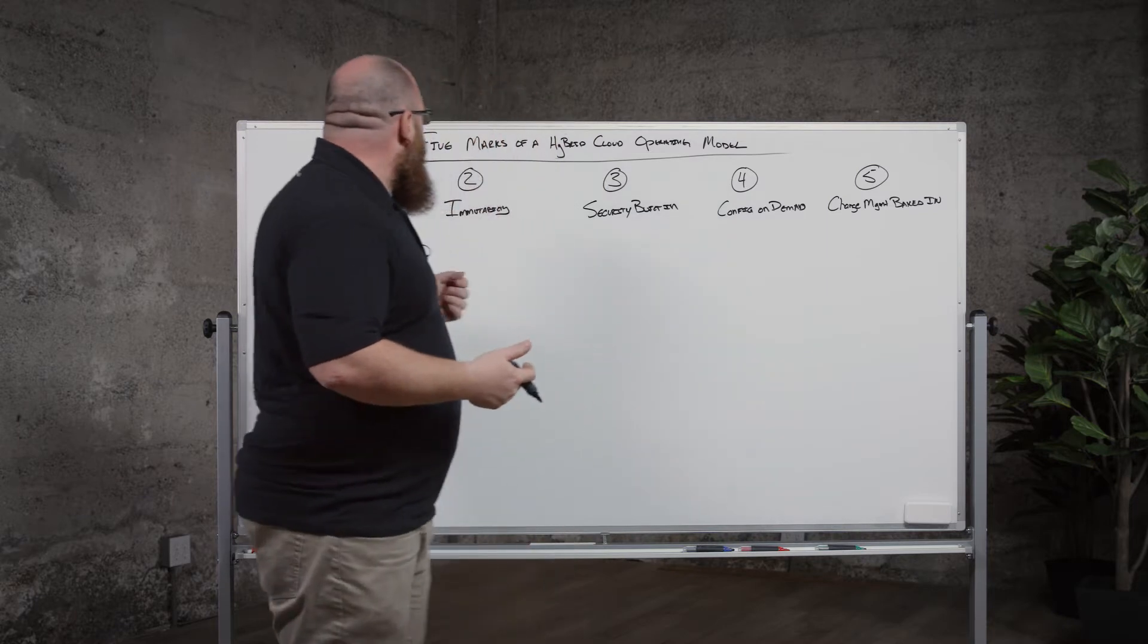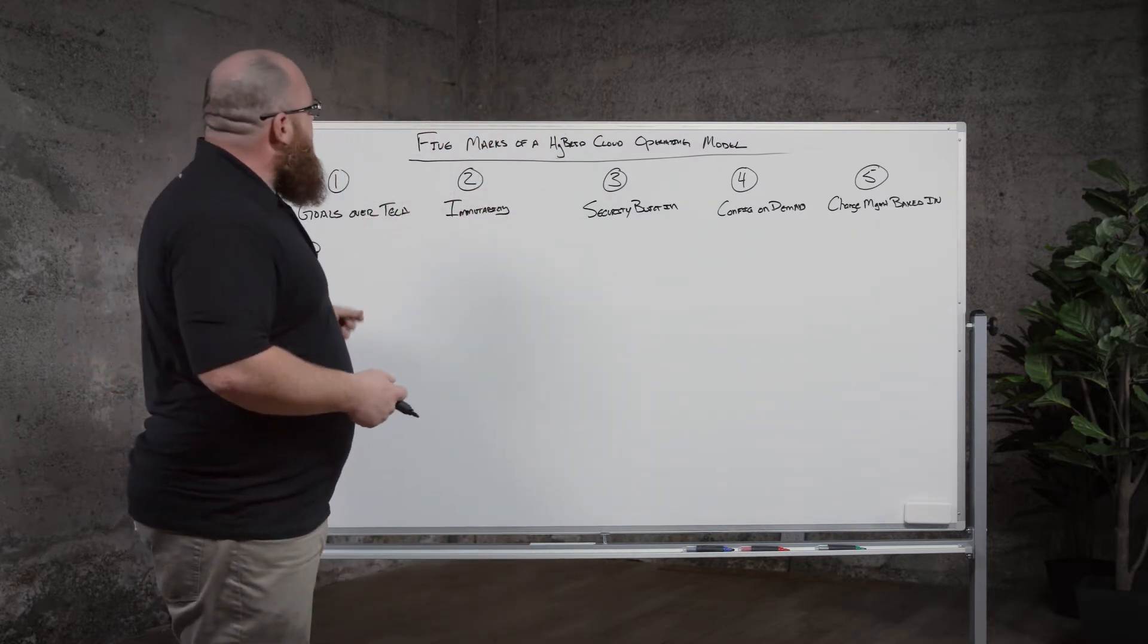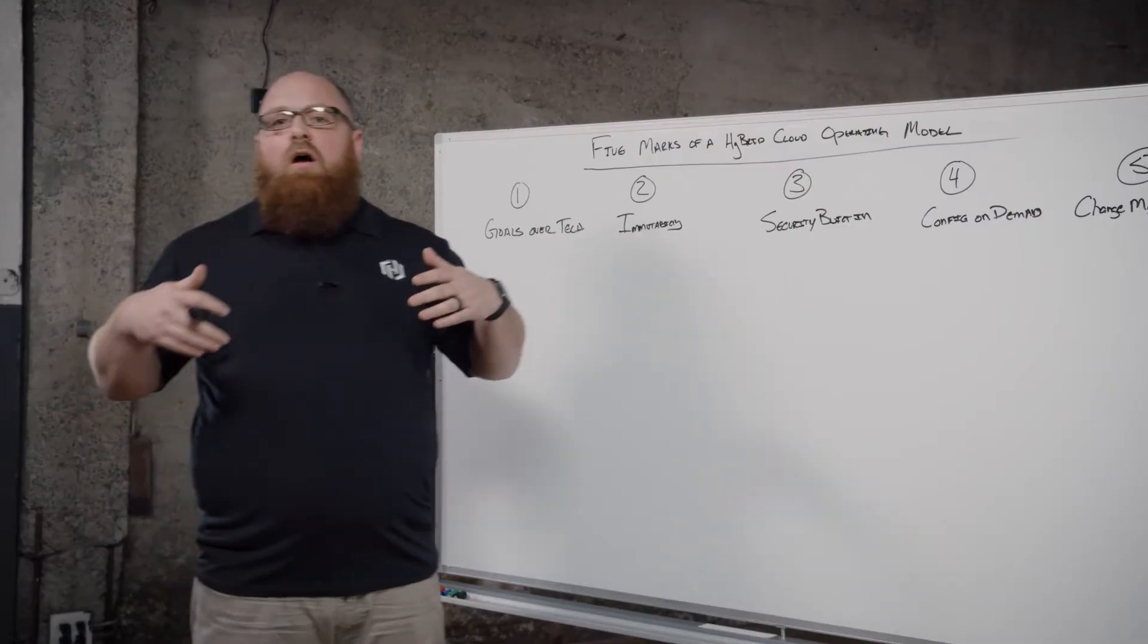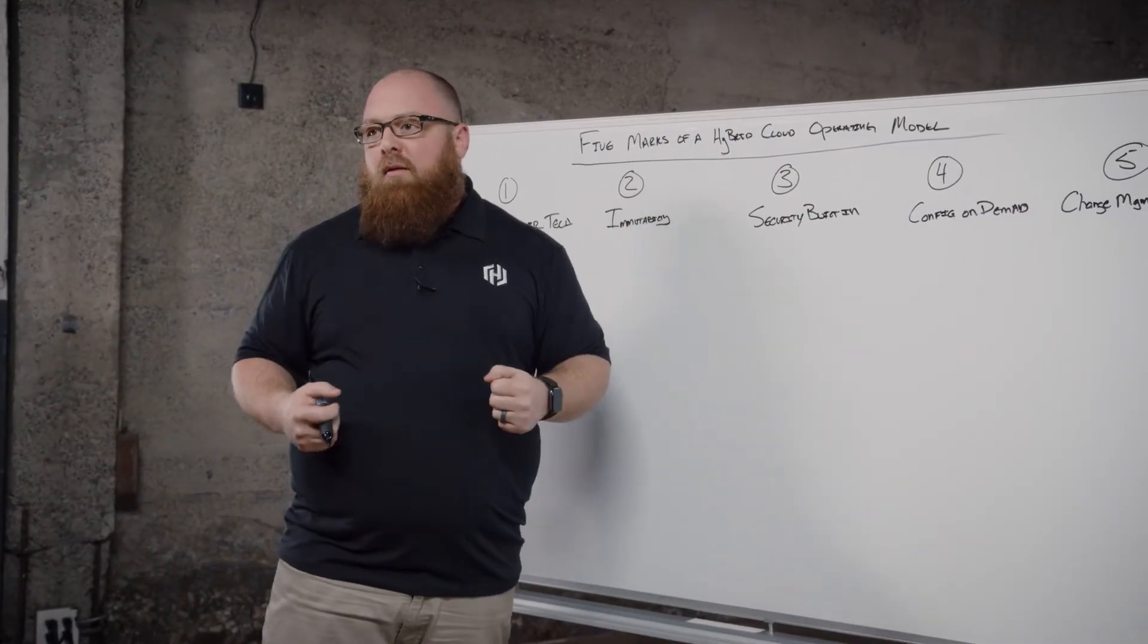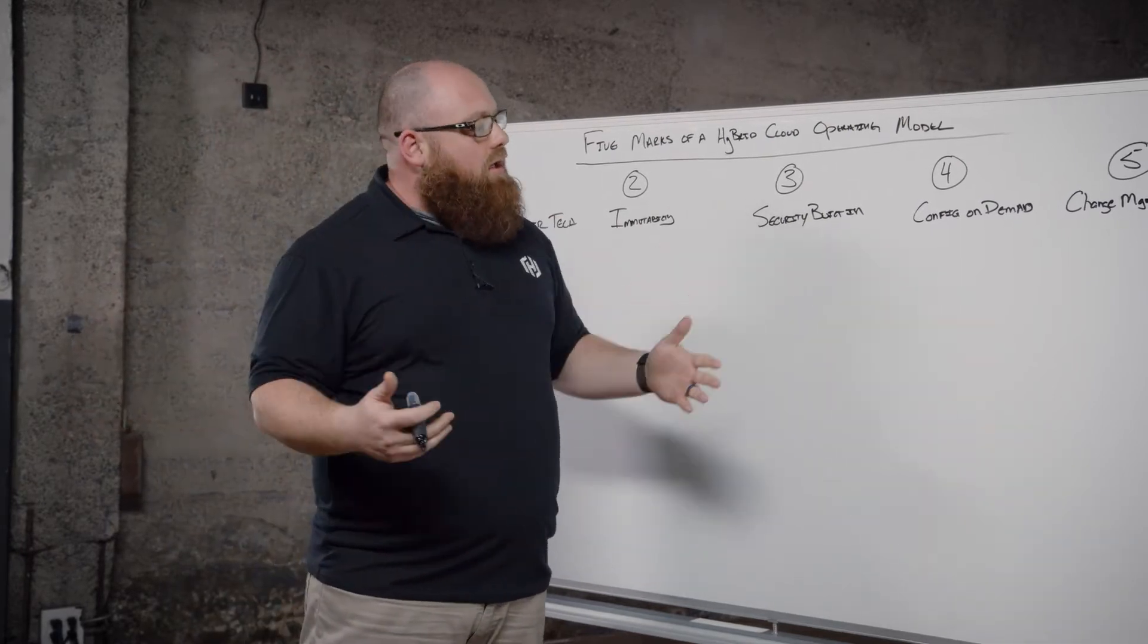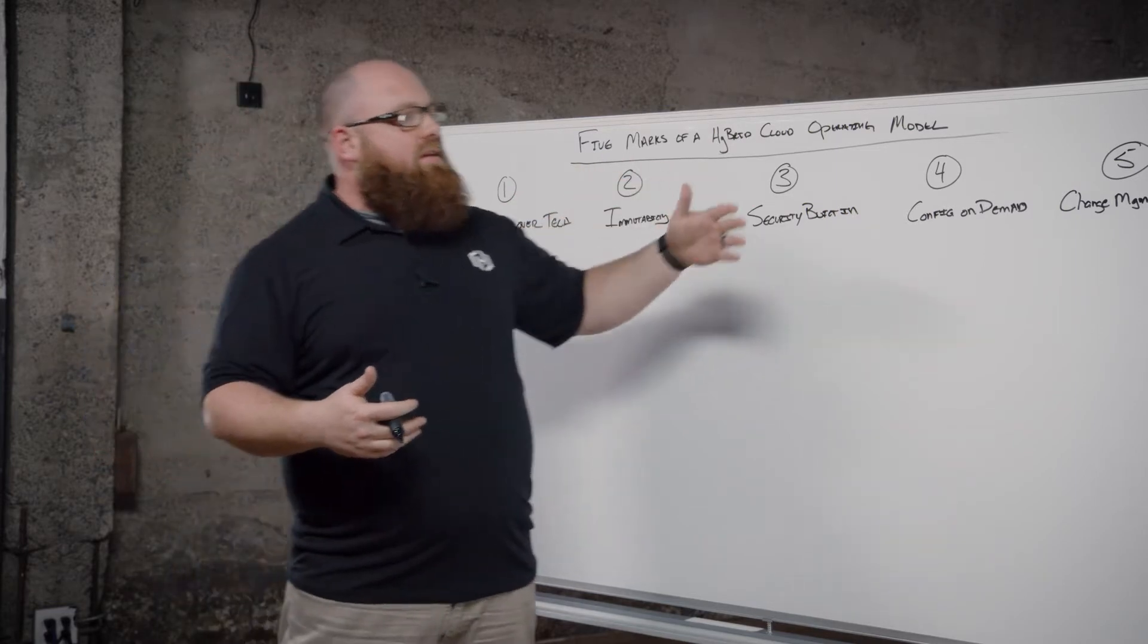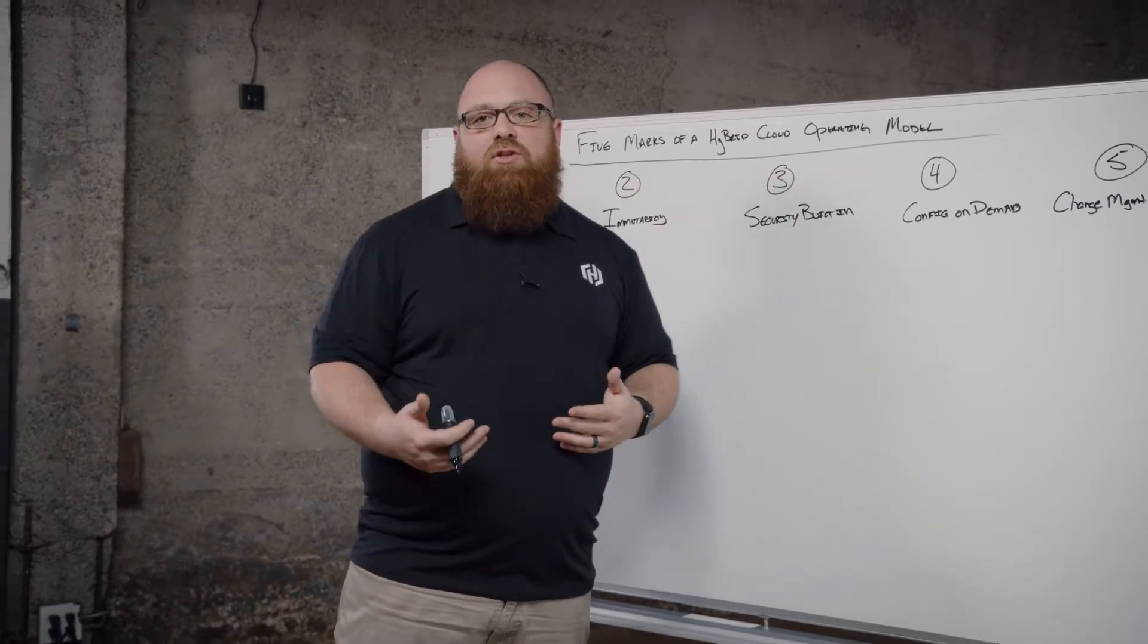Now, the beauty of this whole thing is that you can start at any one of these. These aren't necessarily a systematic way of moving into a hybrid cloud operating model. These are really five characteristics that you should be looking at to say, as I progress, I should be able to see these express themselves as I actually move through.